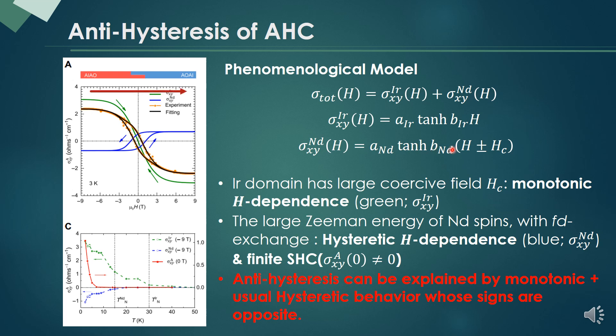When the sweep direction is this, we add this green line and this blue line, which is a usual hysteresis graph. Then we can find the anti-hysteretic behavior.